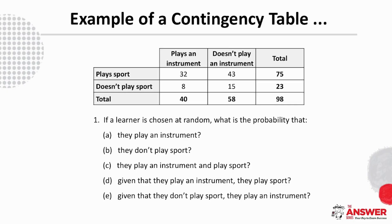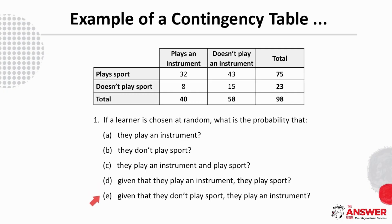So if a learner is chosen at random, what is the probability that A, they play an instrument? B, what is the probability that they don't play sport? D, what is the probability that given that they play an instrument, they play sport? And E, what is the probability that given that they don't play sport, they play an instrument?